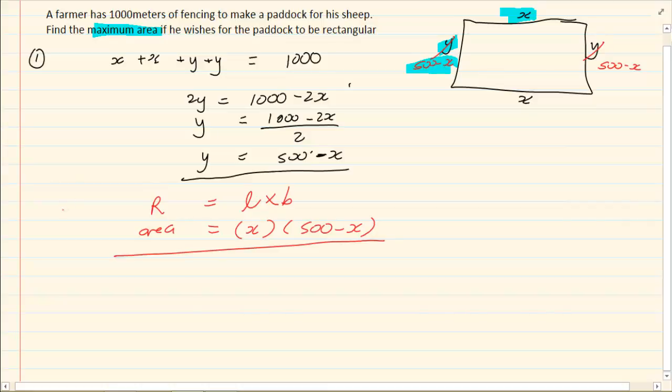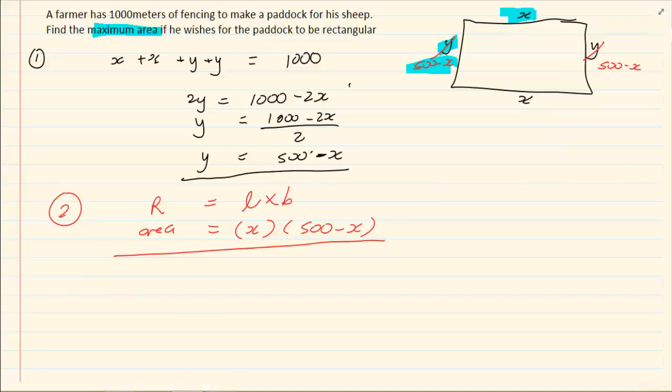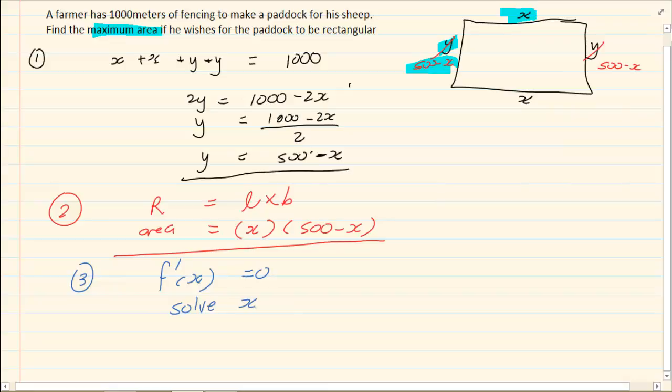But, now comes the trick. The farmer wants a maximum area. Maximum is like your turning points. That is my maximum. If I was doing calculus, this would be my minimum. Maximum is simply turning points. How do you get turning points? We know to get turning points, we do derivative. Then we make it equal to 0 and you solve for x. If you want the other dimension, then you solve for y.